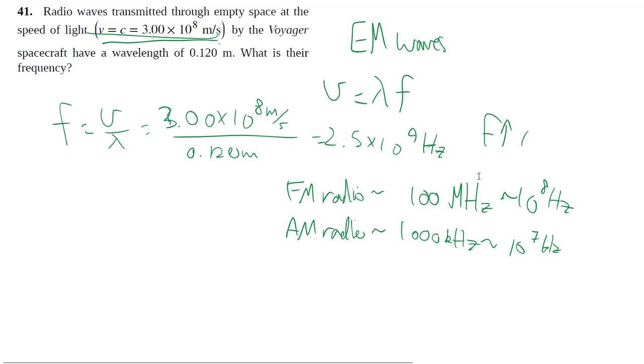So as frequency goes higher for the same wave speed, your wavelength gets shorter. So maybe that's why they opted to use a higher frequency so they can have a shorter wavelength, which leads to a shorter antenna.